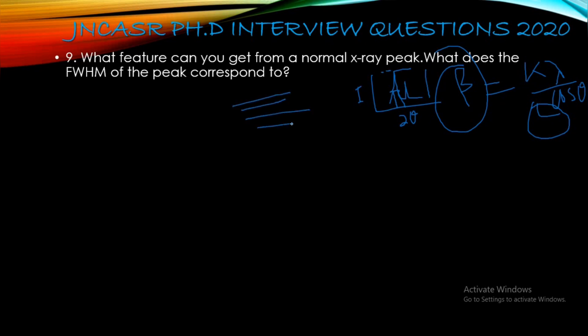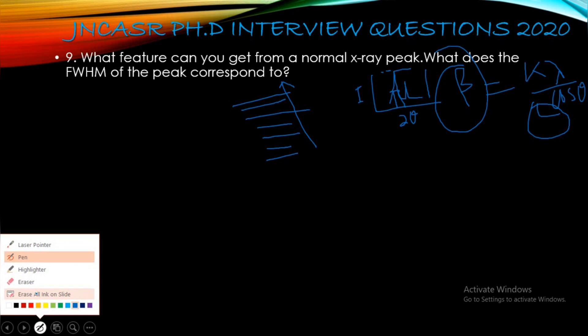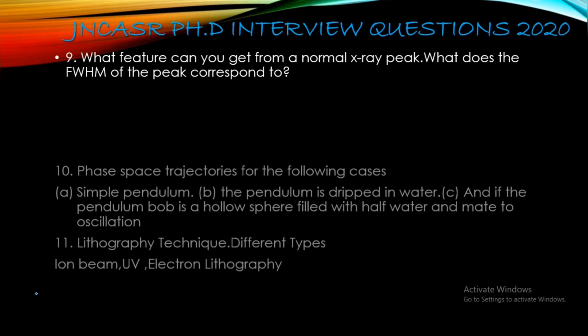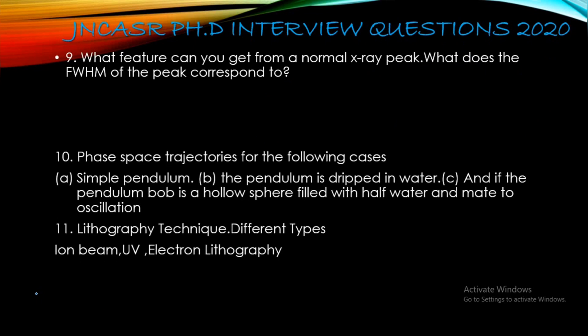Good crystallinity means there is very long-range order and periodicity in the lattice — a large number of planes present and a large crystallite. You should study these things from BD Cullity's standard book or C. Suryanarayana's X-ray diffraction technique. The link has been given in one of the previous videos.